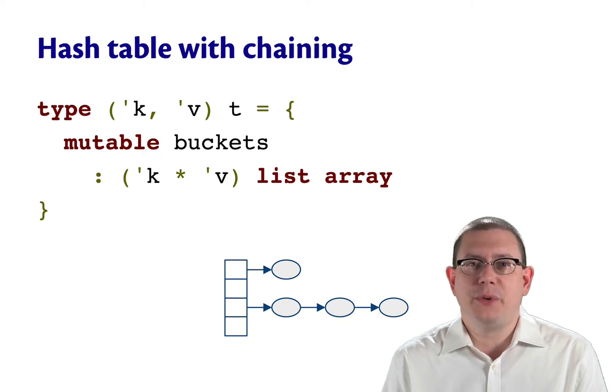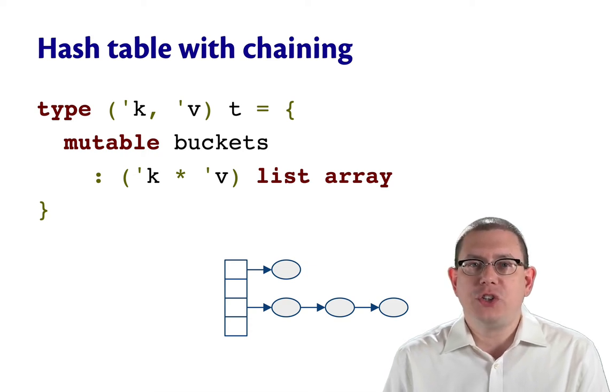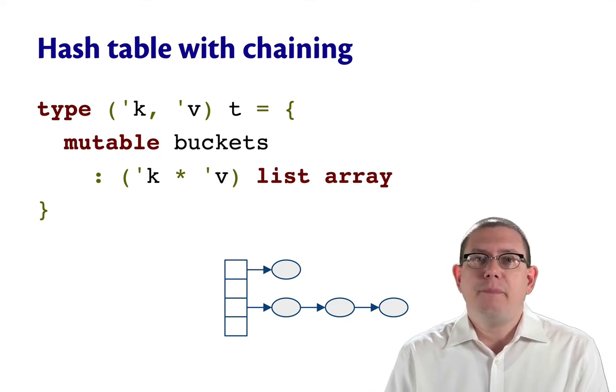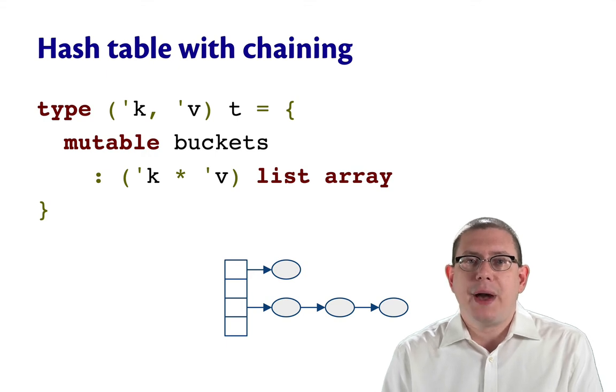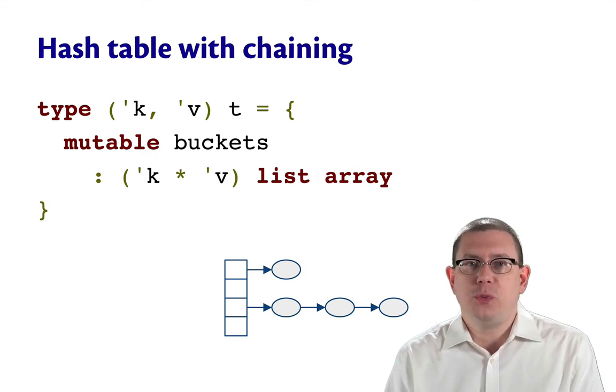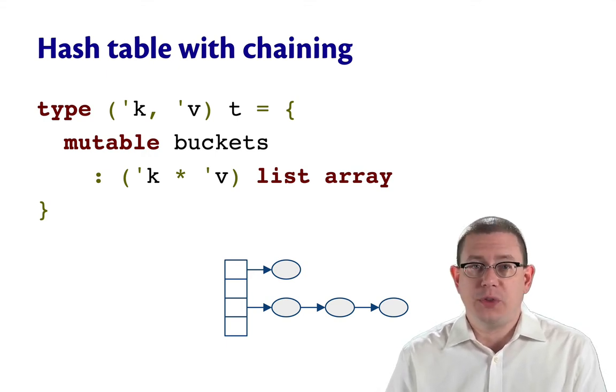When we implemented hash tables with chaining, our representation type had an array of buckets, and at each bucket we stored an association list. The length of that association list could vary from bucket to bucket, but we kept its expected length at a constant by assuming that the hash function distributed keys uniformly over the buckets.